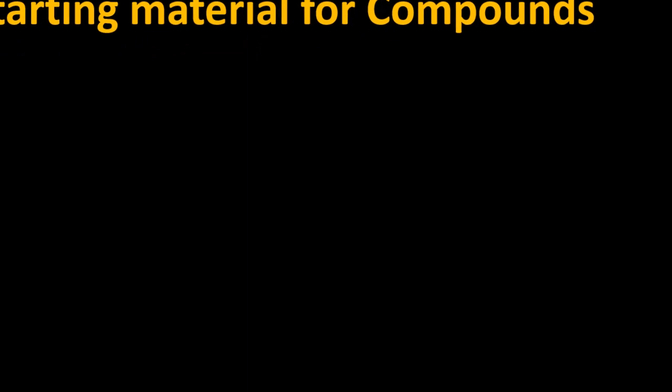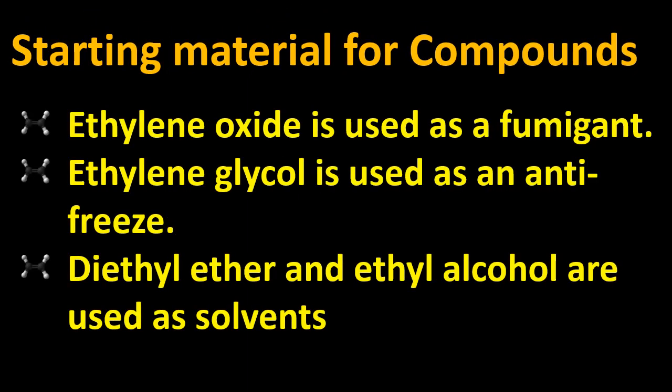Ethylene glycol is used as a fumigant. A fumigant is a method of pest control that completely fills an area with gaseous pesticides to suffocate the pests. Ethylene glycol is also used as an antifreeze.